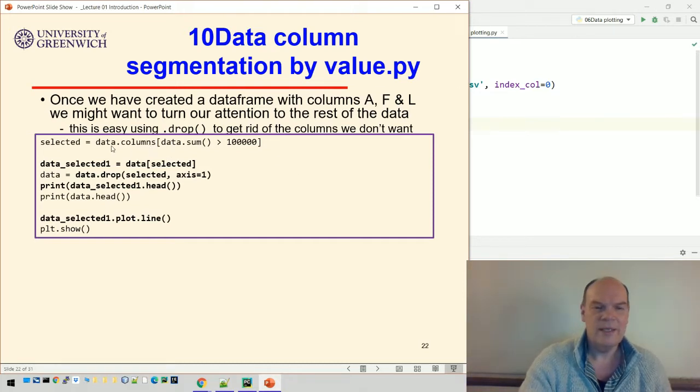So we select these columns. This will be A, F, and L, everything that's over 100,000 sales over the year. We create a data frame here that's data_selected_1. That's the data, those columns. And then we drop those columns, the selected columns from the original data frame.